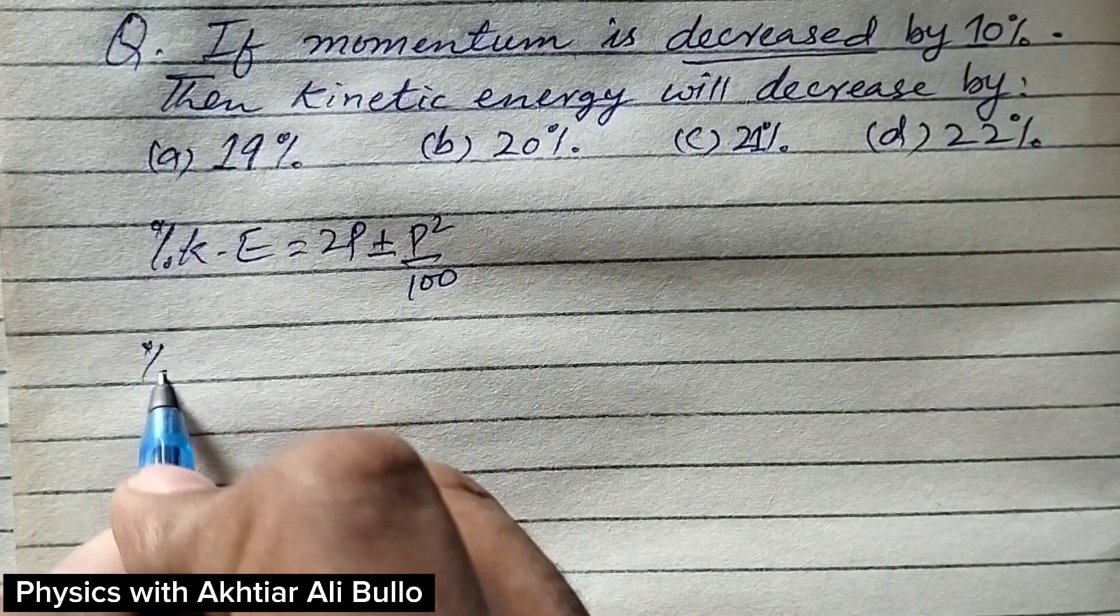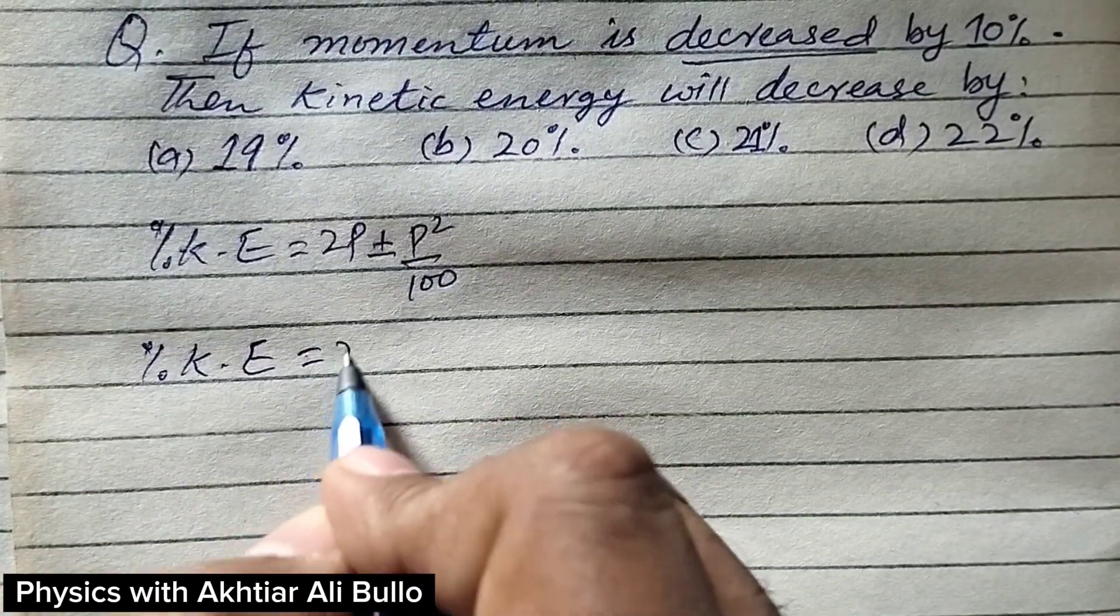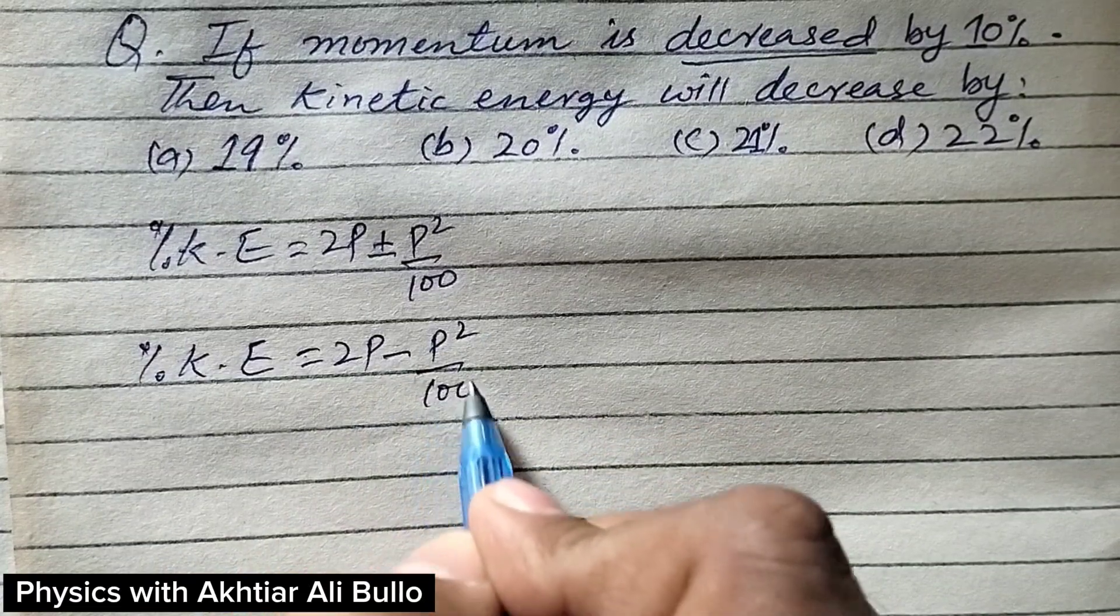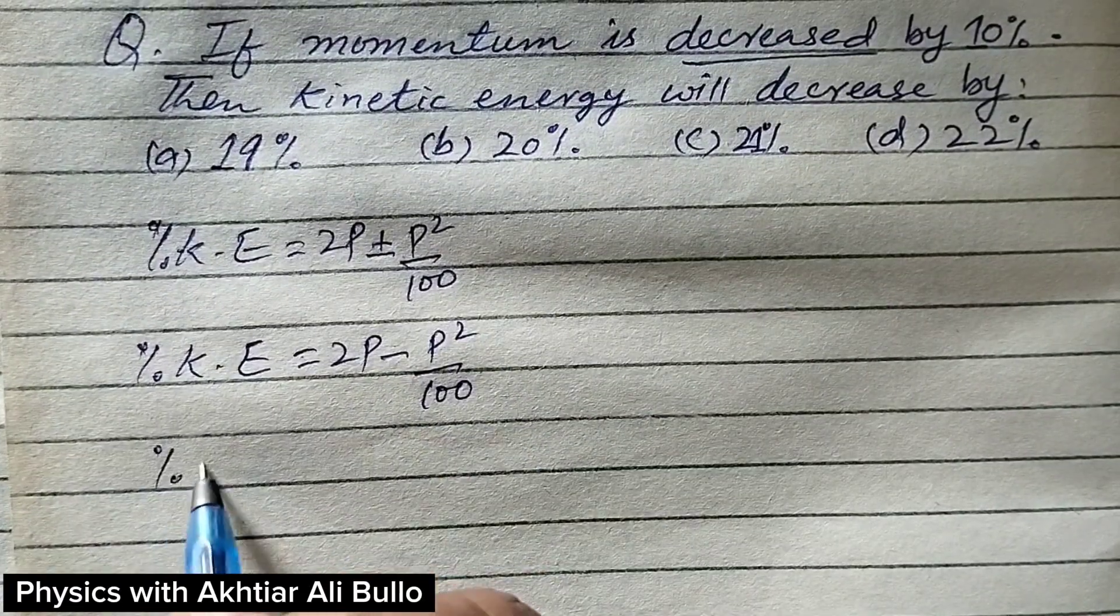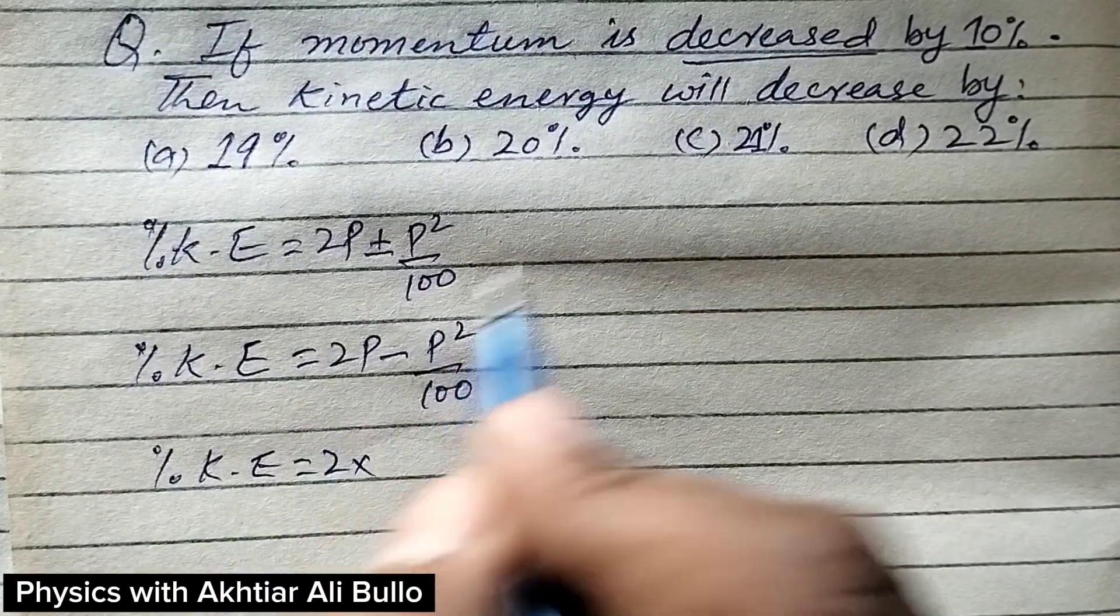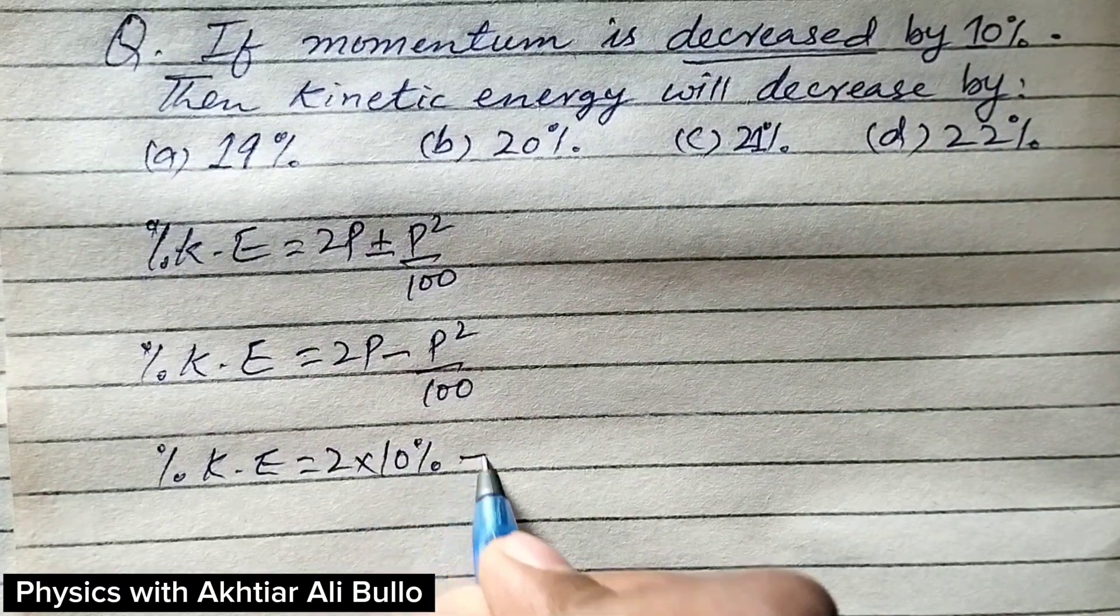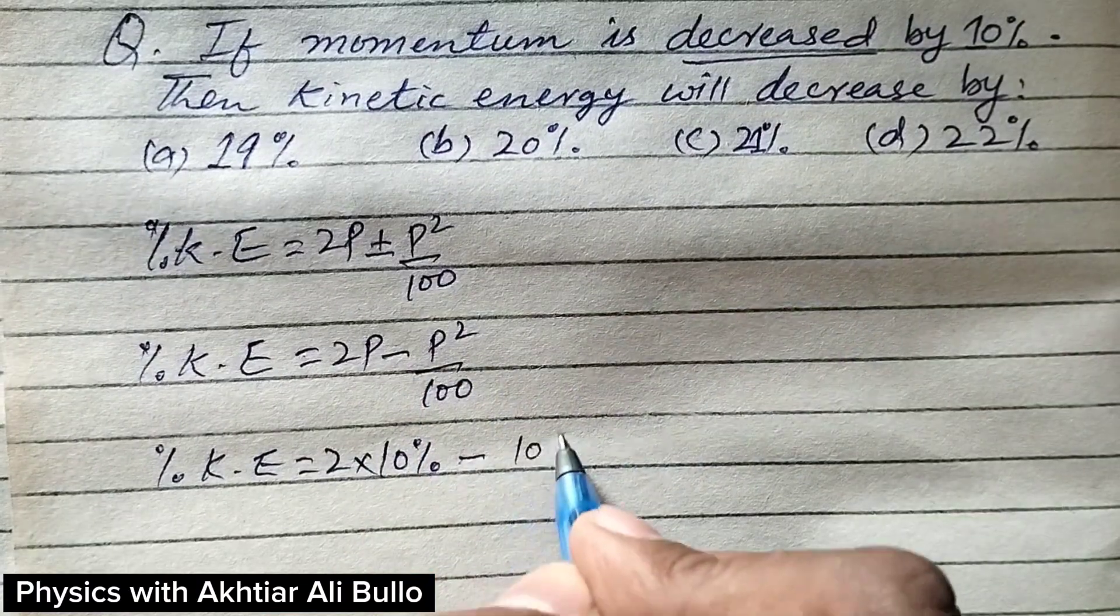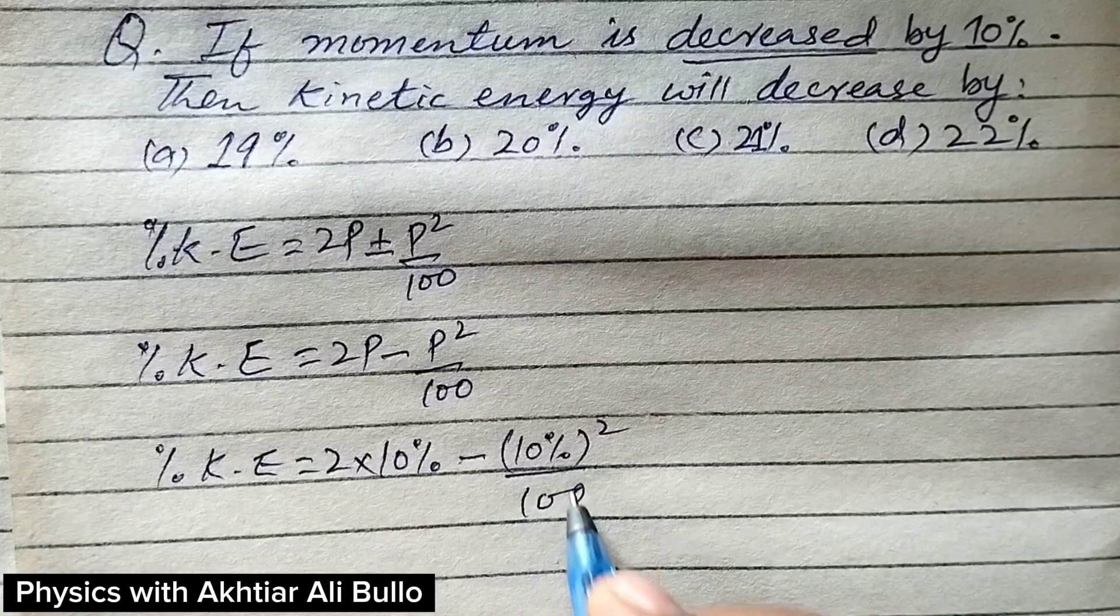So percentage decrease in kinetic energy will be equal to 2p minus p squared upon 100. Percentage decrease in kinetic energy will be equal to 2 into... the percentage in momentum is 10 percent, so 10 percent minus the square of p, means the whole square of 10 percent, divided by 100.